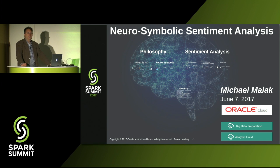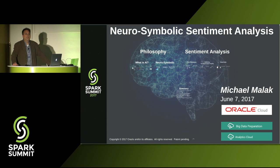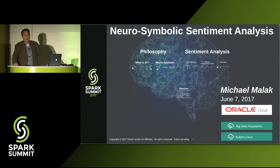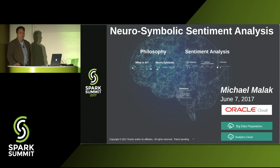If anyone has questions, feel free to come up to one of the two standing microphones. A question from the audience: a couple of months ago, a group from OpenAI released an unsupervised sentiment model based on an LSTM trained to predict the next character in a sequence on Amazon product reviews. They found that one number in the embedding was perfectly correlated with sentiment, and they claimed to match or beat all existing benchmarks. The speaker responded that he hadn't heard of it but found it very interesting.